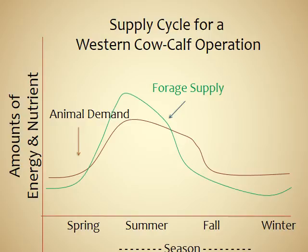I superimposed animal demand over forage supply to highlight that in winter and early spring, animal demand for a cow-calf operation can be higher than what forage supply offers. During winter and early spring, the cow's energy and protein needs aren't being met by the forage, and we'll discuss management practices to overcome that. When forage supply is greater during late spring and early summer, it typically provides enough nutrients for the cow and her calf even when the cow is lactating.